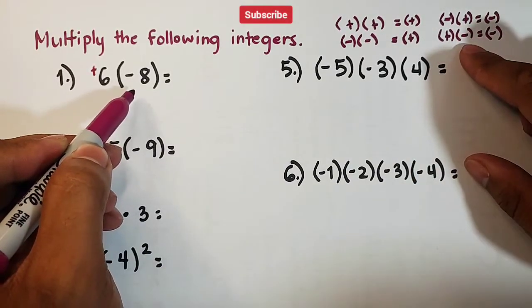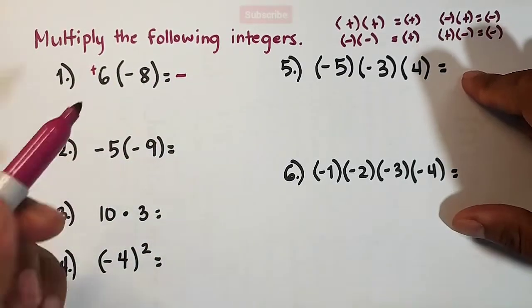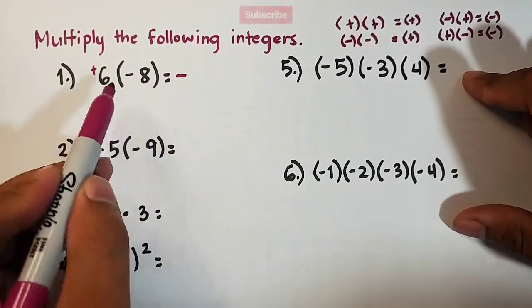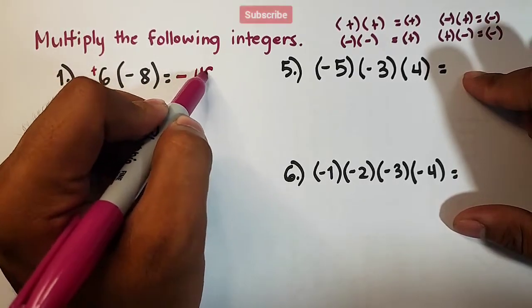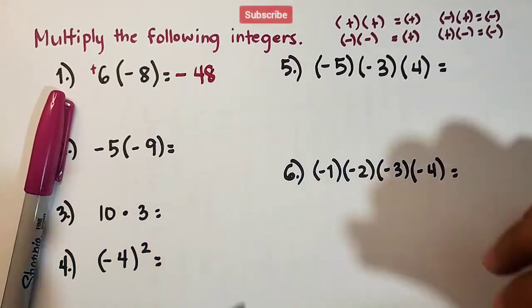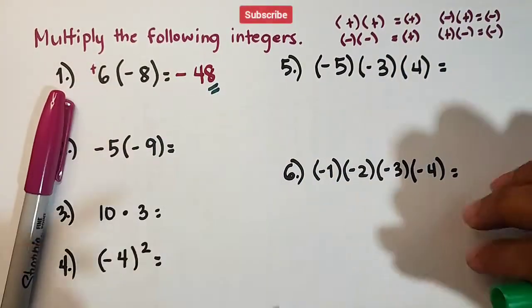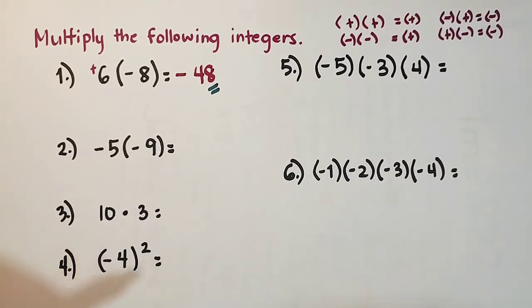So as you can see, based on the rules, different signs, that will give you negative answer. And then, multiply the numbers. 6 times 8 is definitely equal to 48. Therefore, the correct answer for number one is negative 48. So, that's how simple it is, guys.